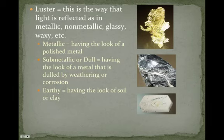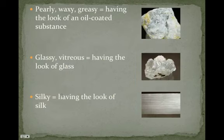Luster is another test — this is the way that light is reflected. It could have a metallic or shiny luster; non-metallic could be dull or earthy; glassy means it could look like glass; or waxy. We use different terms for luster, but typically it's just how it reflects light. We wouldn't just say shiny or not shiny — we want to say metallic, looks like polished metal; sub-metallic; dull; earthy; pearly; waxy. Glassy is also referred to as vitreous — that's the term you should know. Silky means it has the look of silk, and you can see lines in the sample that make it look silky.